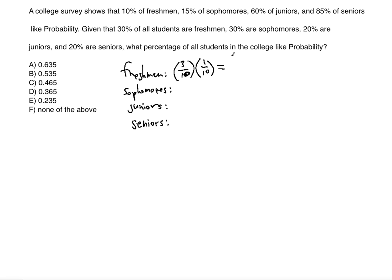So it's going to be 3 over 100. Now let's do the same thing for the sophomores. 30% of all students are sophomores, so again it's 3 over 10. Now we have to multiply to find out the percentage of all sophomores in the college who like probability, so we take the 15%.